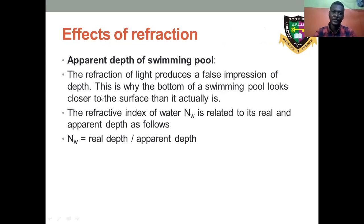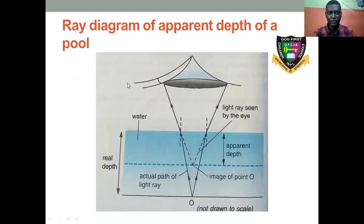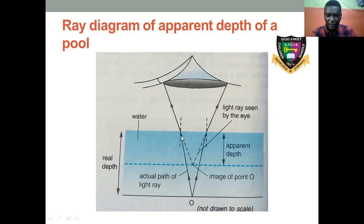Effects of refraction — apparent depth of a swimming pool. If you look at this diagram, you will notice that the ray emerging from the deep part of the pool is coming out refracted, bending away from the normal. Have you ever been to a swimming pool and noticed that the depth appears a bit shallower than it actually is?